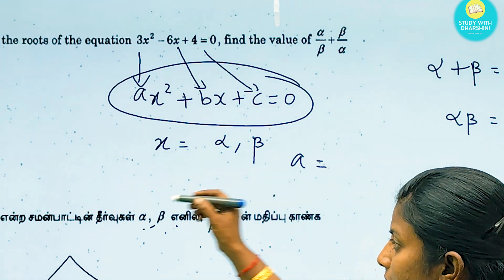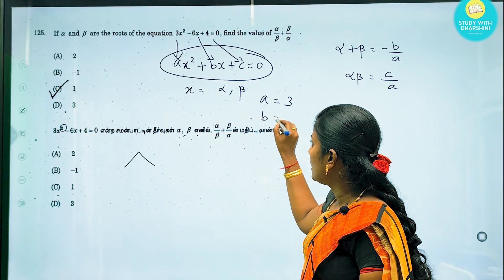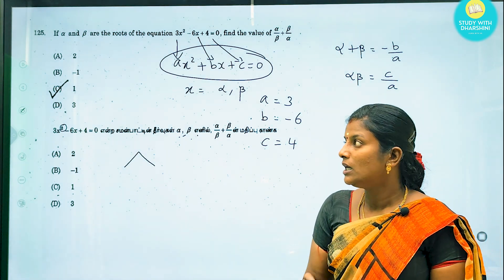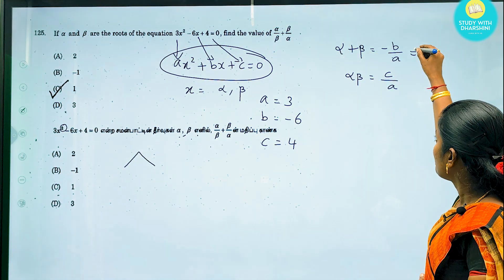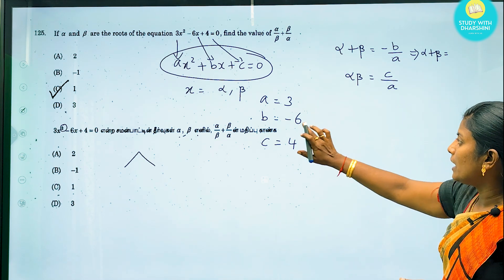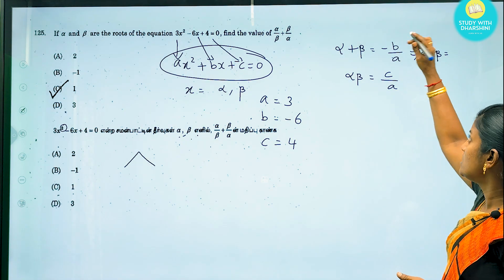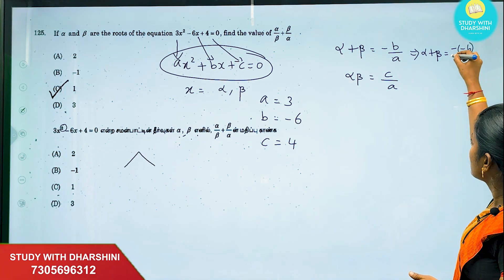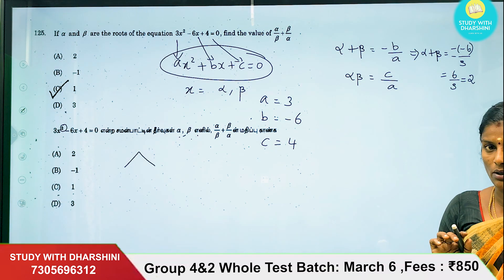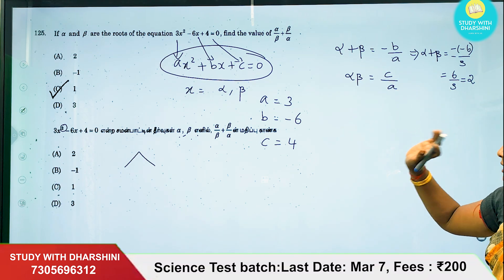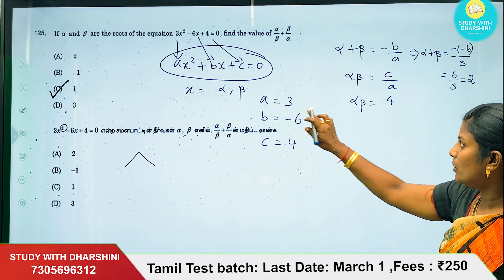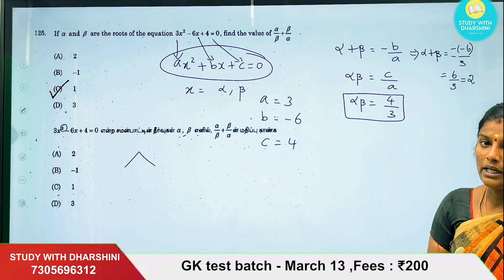The sum of the roots, alpha plus beta, equals minus b by a. That is minus (minus 6) divided by 3, which equals plus 6 by 3, simplifying to 2. So alpha plus beta equals 2. The product of the roots, alpha times beta, equals c by a, which is 4 divided by 3. So alpha times beta equals 4 by 3.